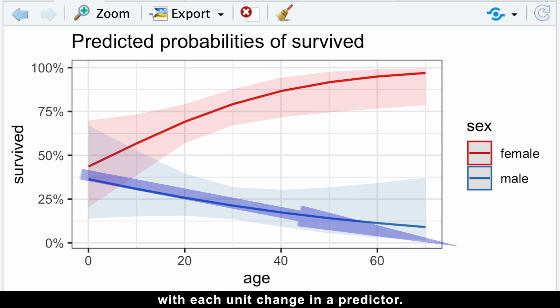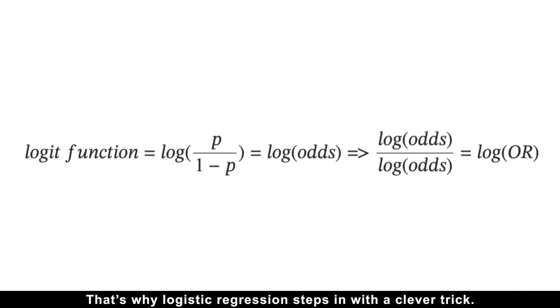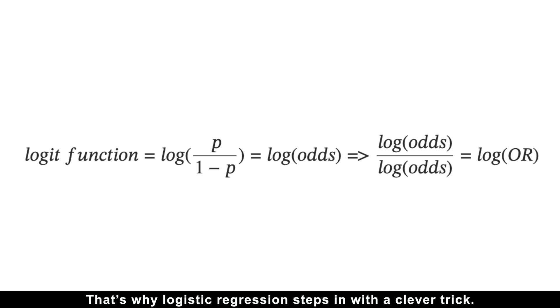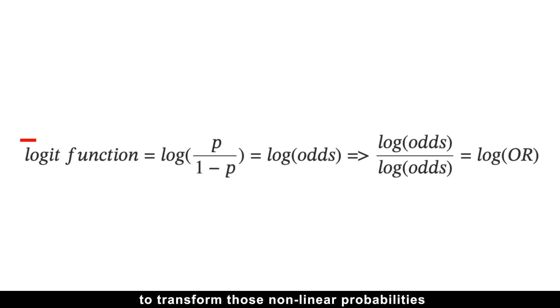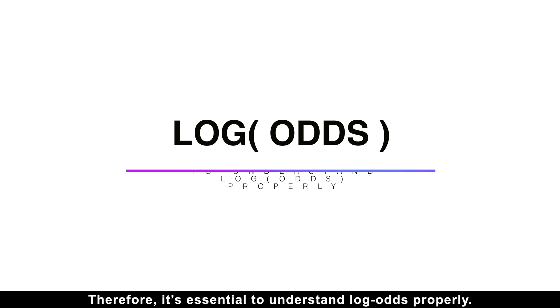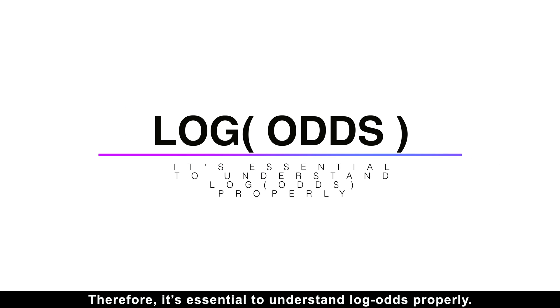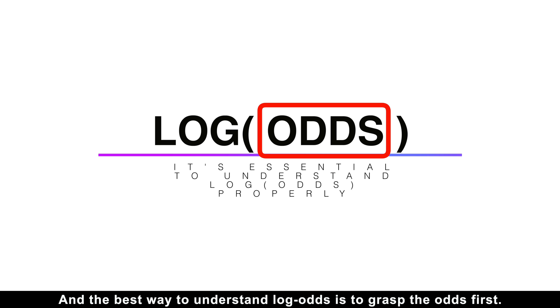And that's why logistic regression steps in with a clever trick. It uses the logarithm of odds, also known as the logit function, to transform those non-linear probabilities into a linear relationship. Therefore, it's essential to understand log odds properly, and the best way to understand log odds is to grasp the odds first.